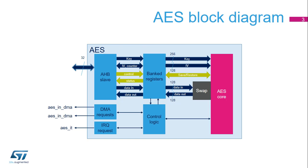The AES core is the unit in charge of processing data. Its logic supports 1, 8, 16 or 32-bit data swapping. Internal data paths are 128 bits wide for data and initialization values and 256 bits for keys. 128-bit keys are also supported.